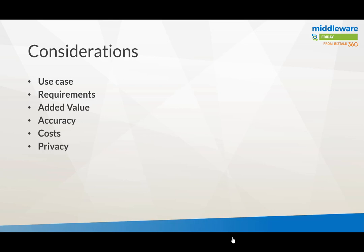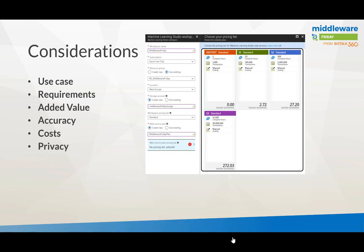Other considerations around machine learning and this scenario include privacy — I obfuscated the data in the loan application, and later looked up the client details separately, so there is privacy involved. There are also costs. Looking at the machine learning workspace, depending on the amount of compute, transactions, and scaling, it can be around 275 euros a day depending on your workload. So it's important to pick the right SKU based on your workload and what you want to achieve with machine learning.